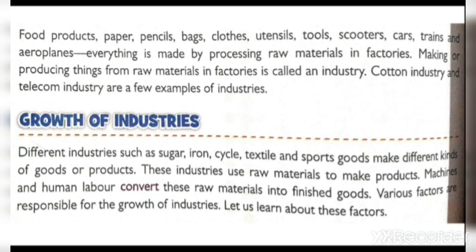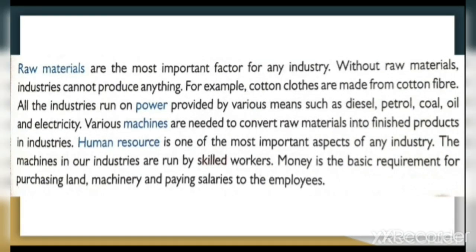Raw materials are the most important factors for any industry — without raw materials, industries cannot produce anything. For example, cotton cloth is made from cotton fiber. All industries run on power provided by various means such as diesel, petrol, coal, oil, and electricity. Various machines are needed to convert raw materials into finished goods. Human resources are one of the most important aspects of any industry — the machines in our industries are run by skilled workers. Money is the basic requirement for purchasing land, machinery, and paying salaries to employees.